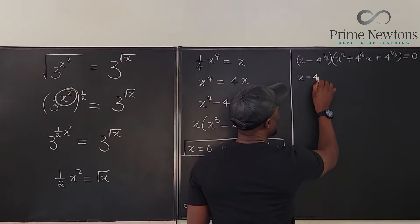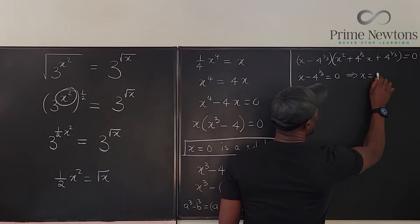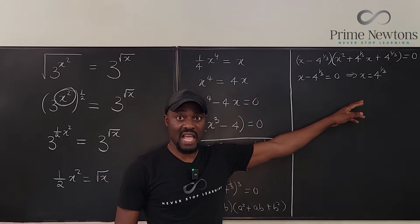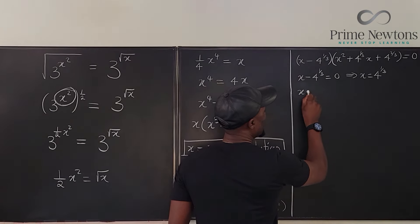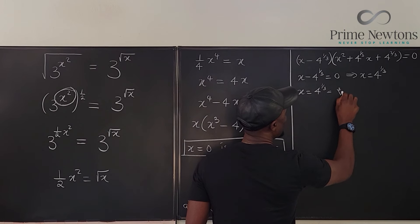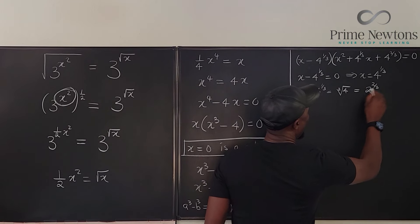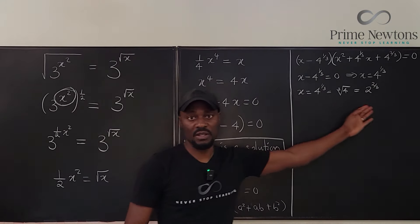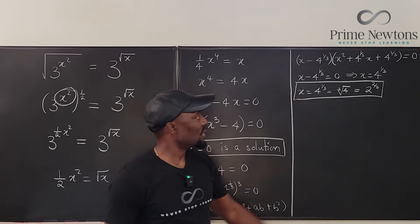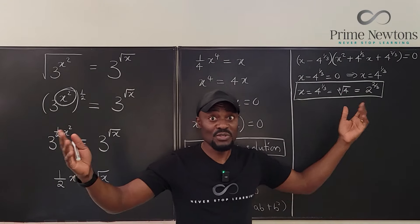By the zero product property, x - 4^(1/3) = 0, which gives x = 4^(1/3). That's our second answer. We can write it as the cube root of 4, or equivalently 2^(2/3), since 4 = 2² and the cube root gives 2^(2/3). All of these forms are equivalent.